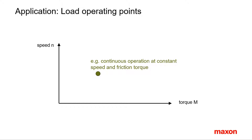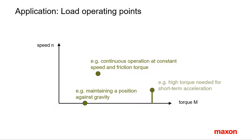For example, a constant operation at the given torque and speed. Or maintaining a position against some external force at zero speed. Or speeding up a mass inertia — usually that's where the highest torque occurs.